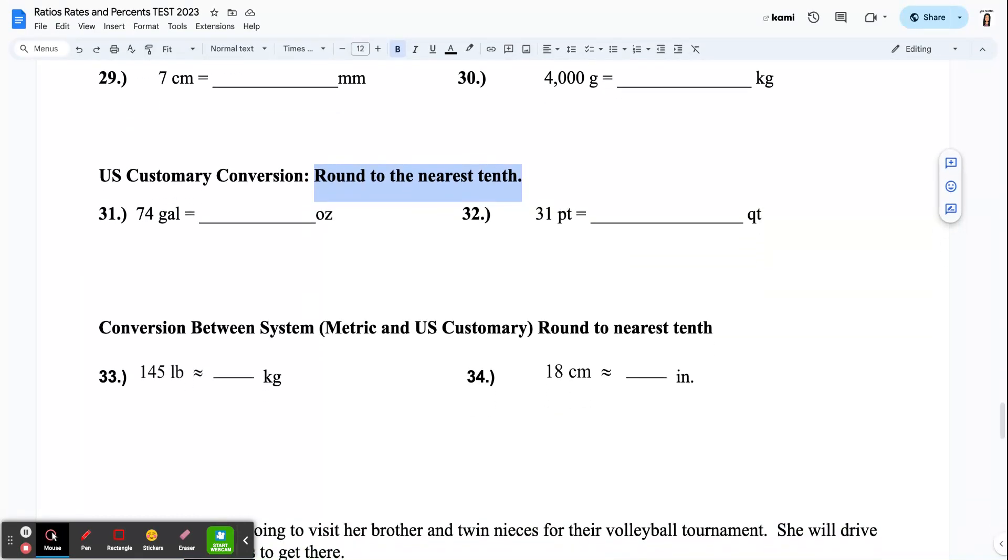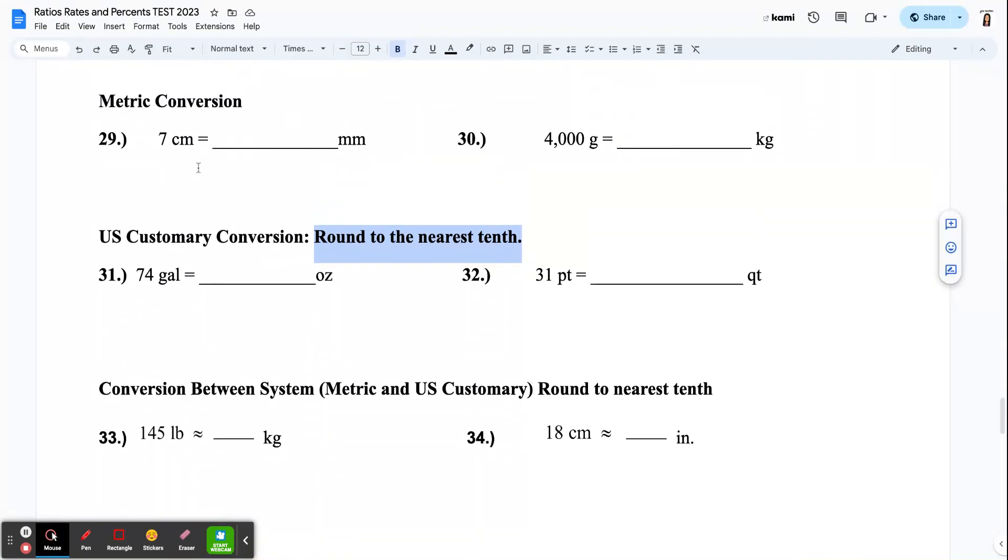The last part is a conversion between systems. So we had just metric, then we had just U.S. customary. Now we're converting between systems, and we're still going to round to the nearest tenth. So if I have 145 pounds, roughly, how many kilograms is that? So pounds is what we use in the U.S. Kilograms is our worldly measurement and what scientists use.